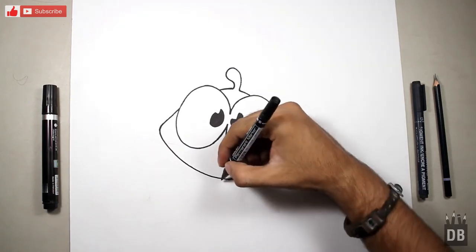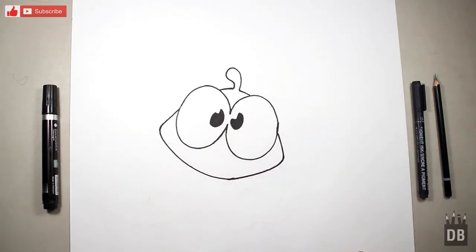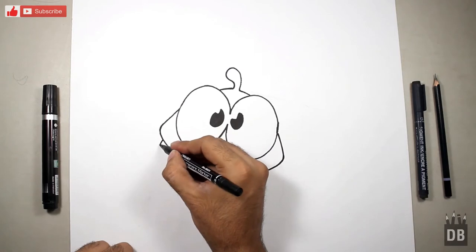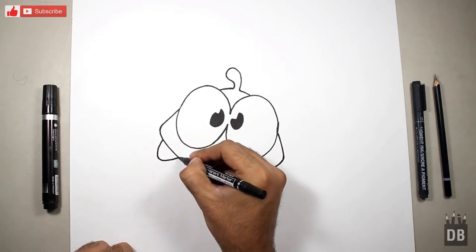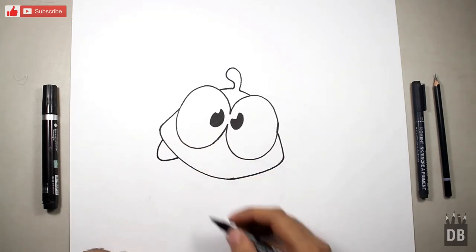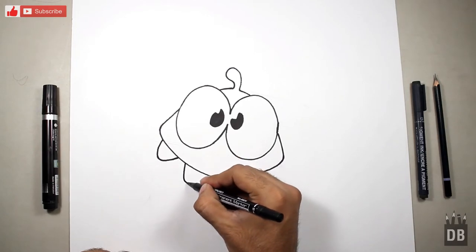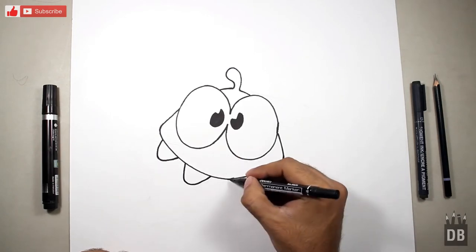Okay, now we have to make his big teeth. They are also round. Don't make pointy like fangs. It's round, curved teeth. And he is smiling as you can see.